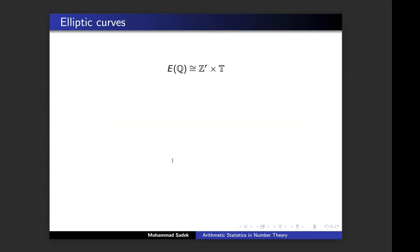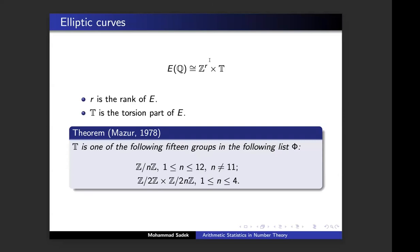This is the main picture: I have an infinite part, I have a finite part. R, the rank, describes how big the infinite part is, and T is the torsion part. In 1978, Mazur managed to classify the torsion part of an elliptic curve over the rational field. It is one of 15 groups: either a cyclic group of order 1 through 12 (excluding 11), or a product of two cyclic groups of a specific format. He proved this list is complete. So we know everything about the torsion part of elliptic curves over ℚ.